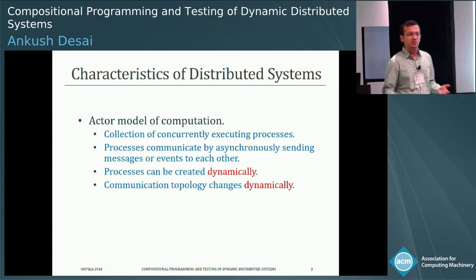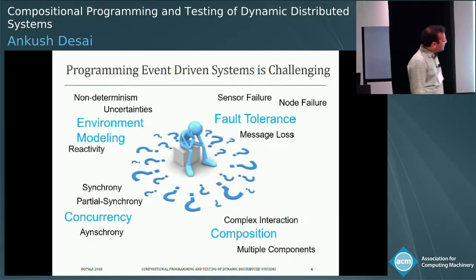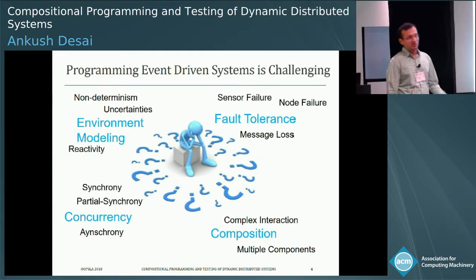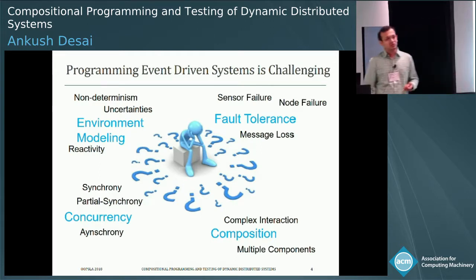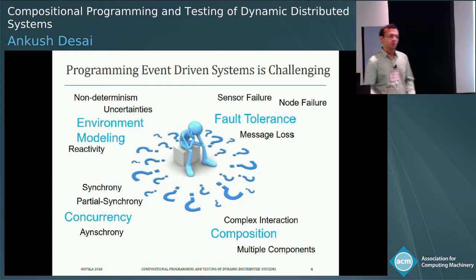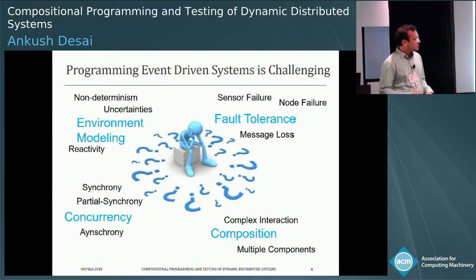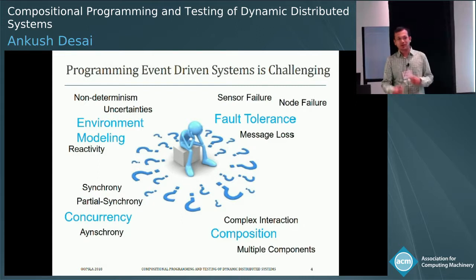Building this kind of dynamic distributed system is hard because you have to account for concurrency, failures, and non-determinism. In general, real-world distributed systems are not monolithic — they consist of compositions of multiple protocols working together to ensure correctness, so you also have to handle complex interactions.